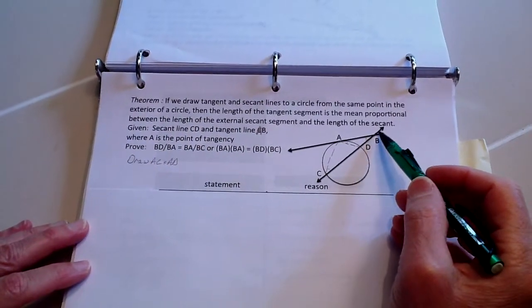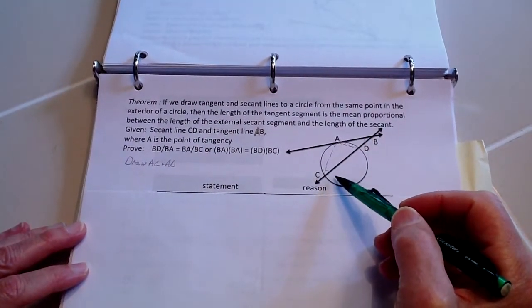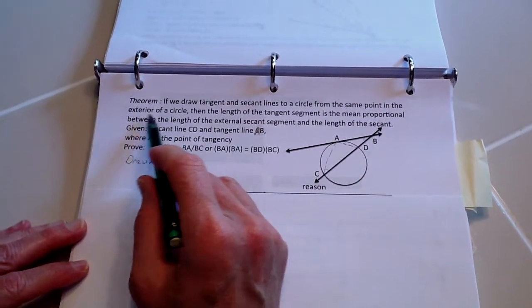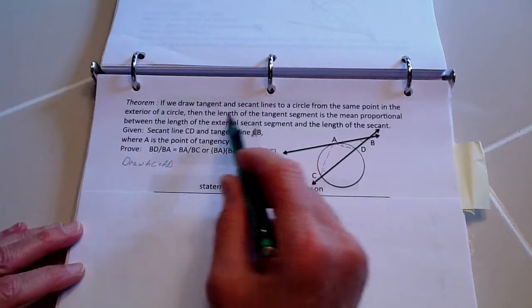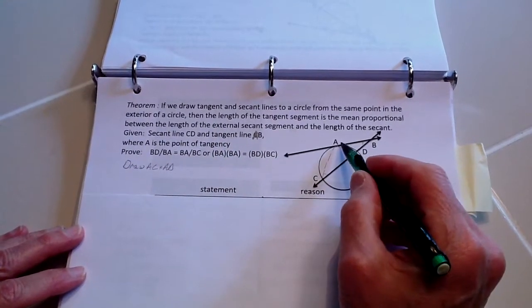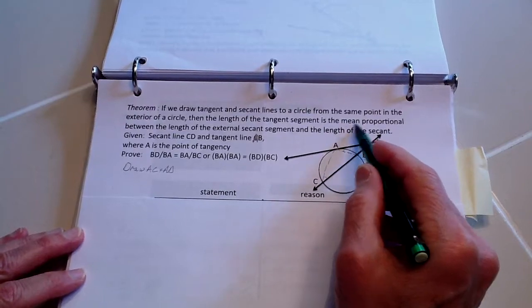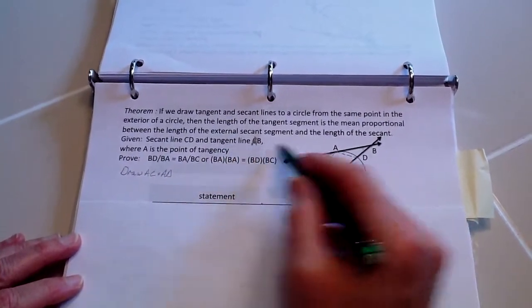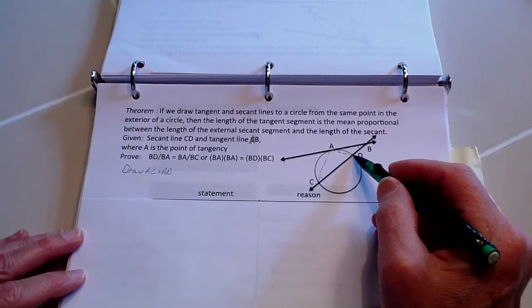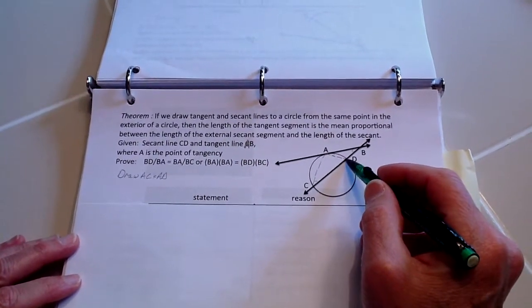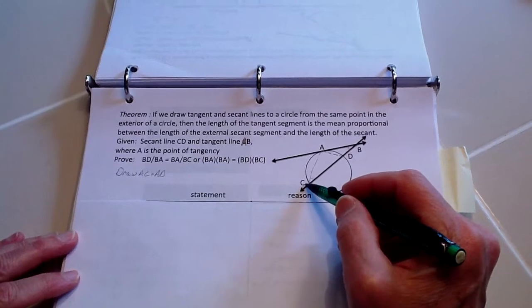If we draw tangent and secant lines to a circle from the same point in the exterior of the circle over here, then the length of the tangent segment, which is this part right here, is the mean proportional between the length of the external secant segment and the length of the secant.